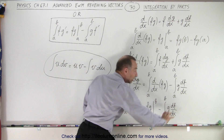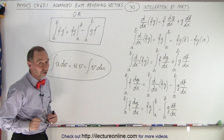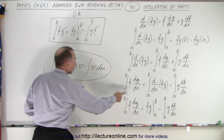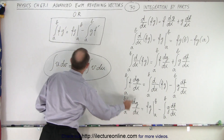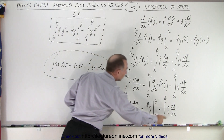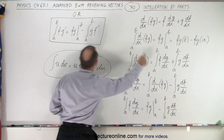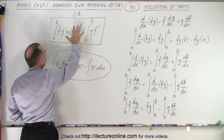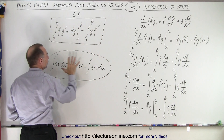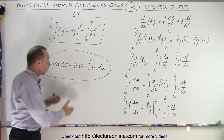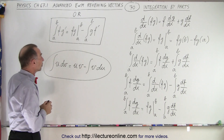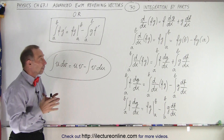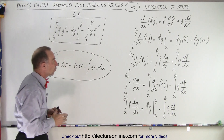To simplify the notation, instead of writing dg/dx we can write g prime, and df/dx we can write f prime. We can write it in that compact form, or again in the general formula you might have seen before, without the limits. Now you can see how the integration by parts equation is derived.